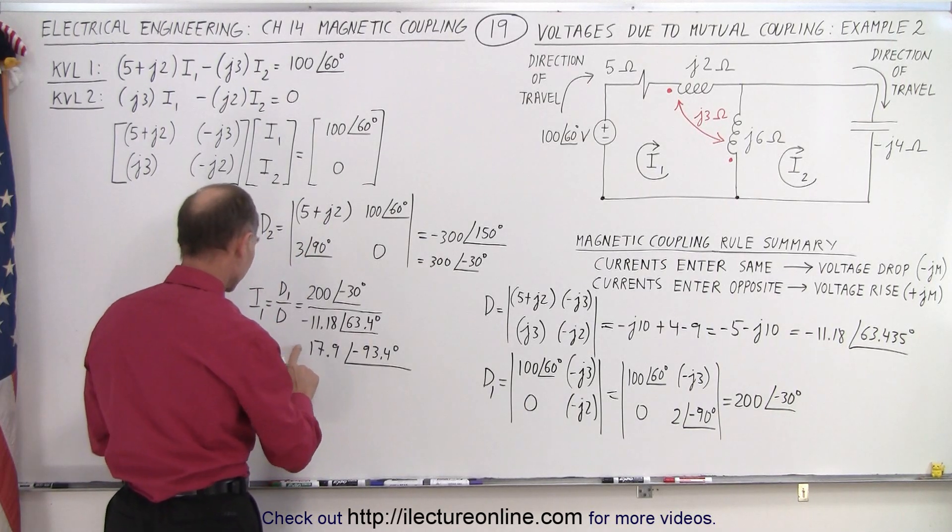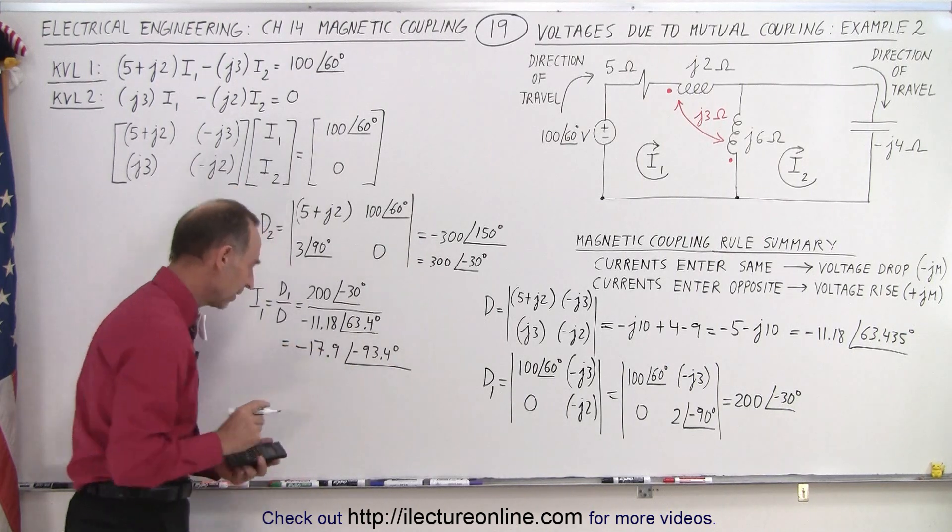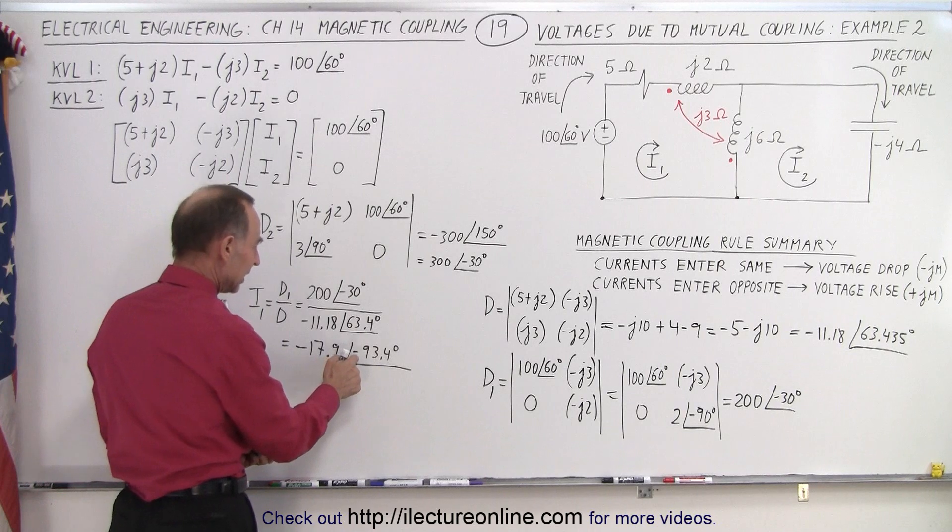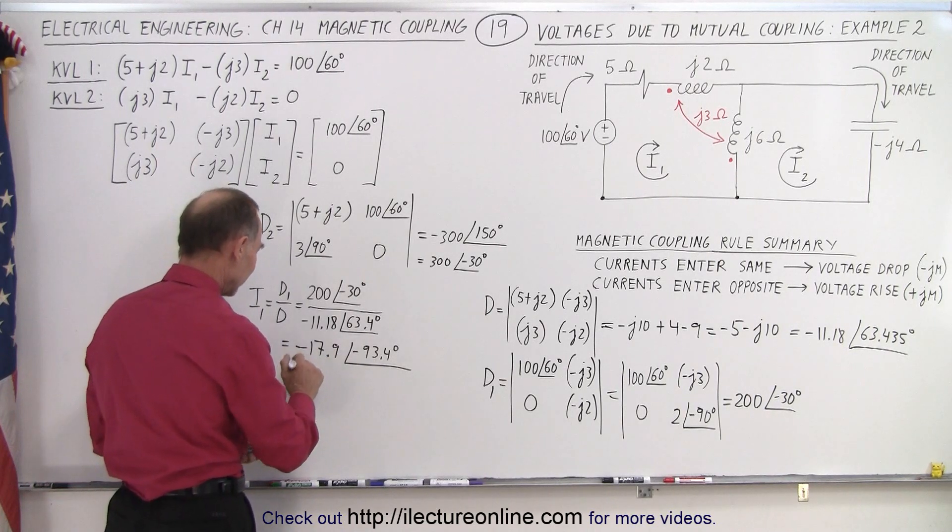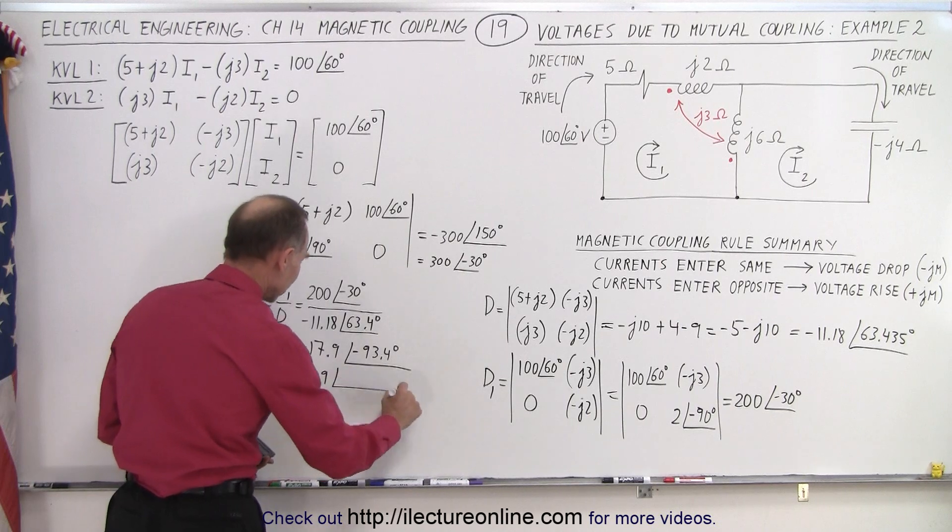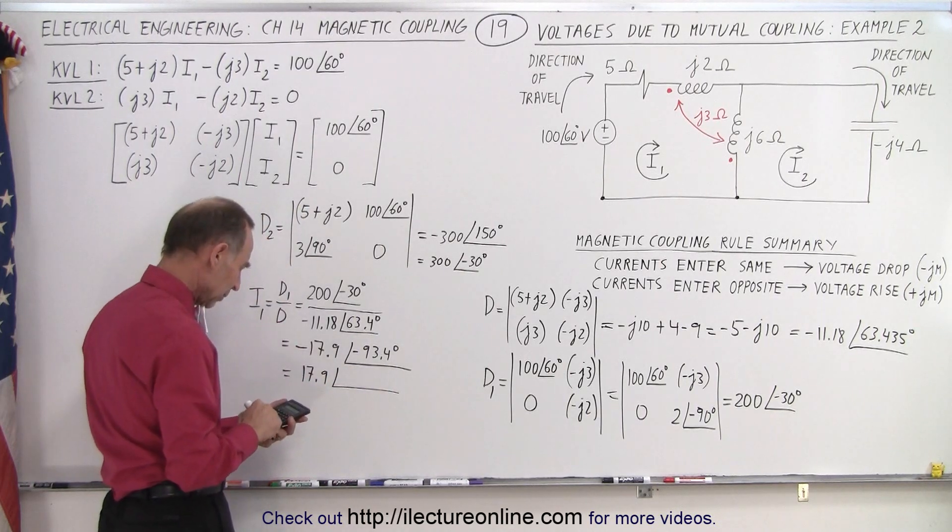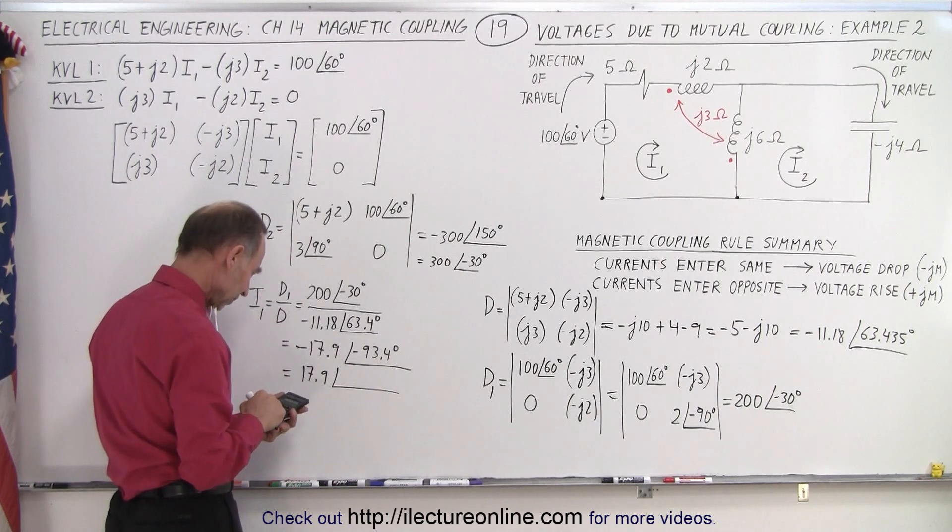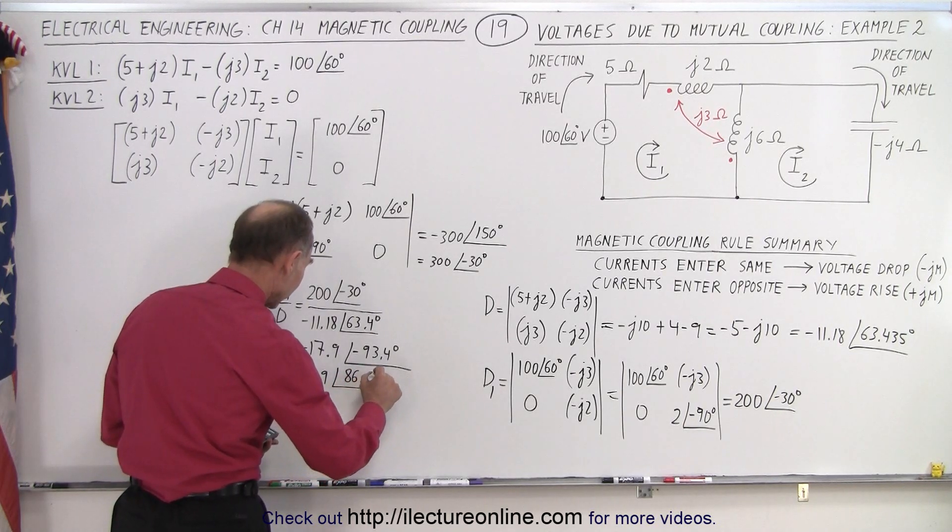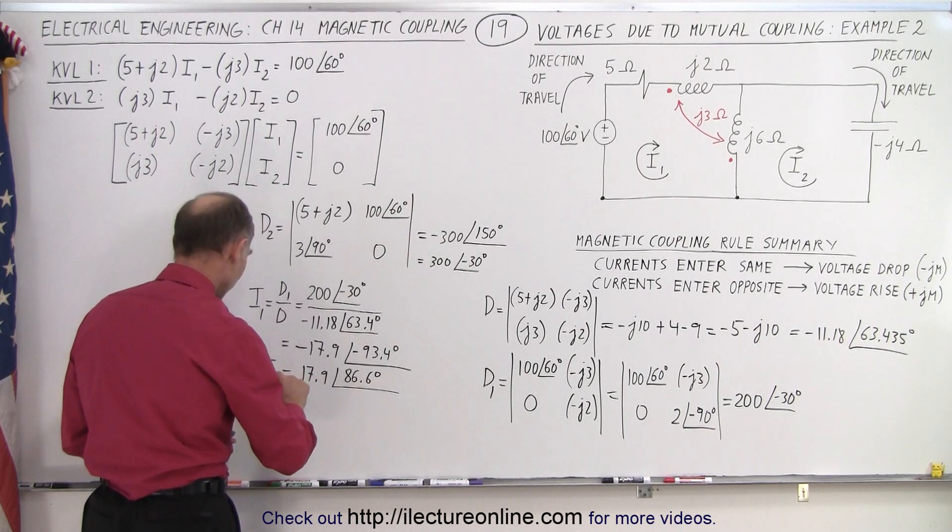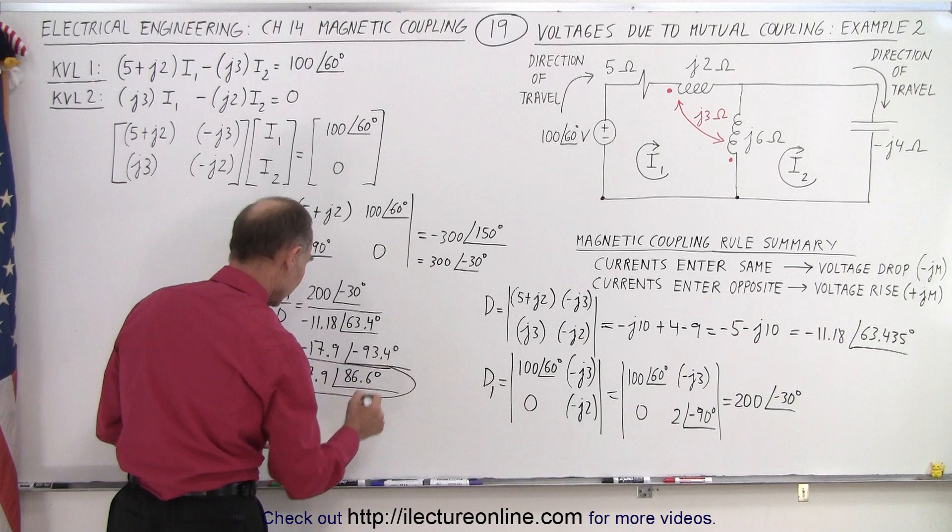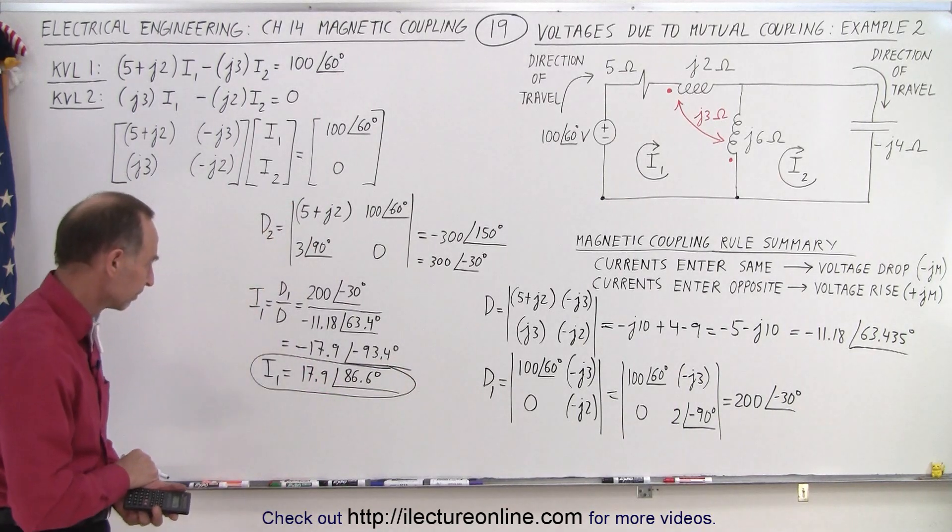Did I forget my minus? I certainly did. Can't forget the minus. But now I can add 180 degrees to this and get rid of this negative sign. So this becomes equal to 17.9 with a phase angle of 93.4 negative plus 180, maybe 86.6 degrees. And that gives us I1.